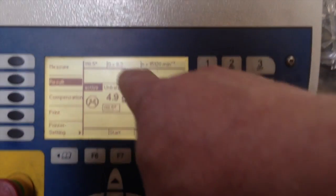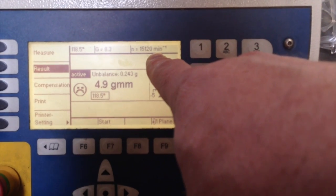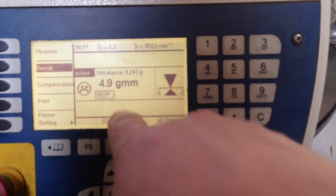And this tool checks G 8.3 at 15,120 RPM, displacement of 4.9 gram millimeter.